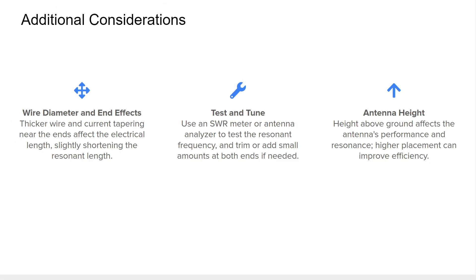In addition to calculating the length and adjusting for the velocity factor, there are a few other key factors to consider when constructing a dipole antenna. First, thicker wires and end effects — the way current behaves near the end of the antenna — can slightly shorten the resonant length, so it's always a good idea to cut your wire slightly longer and trim as needed. This leads to our next step: testing and tuning. Using an SWR meter or an antenna analyzer, you can find your resonant frequency and make adjustments. Lastly, antenna height plays a significant role in performance — generally, the higher the antenna the better, particularly for HF bands. For a dipole antenna, the rule of thumb is to get it one half of a wavelength above ground.